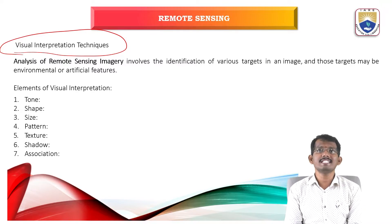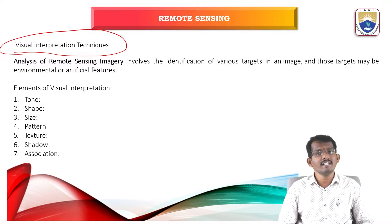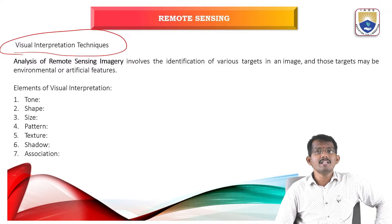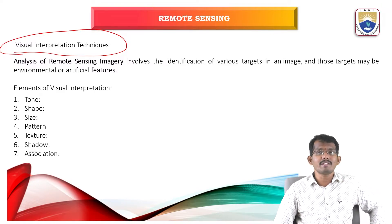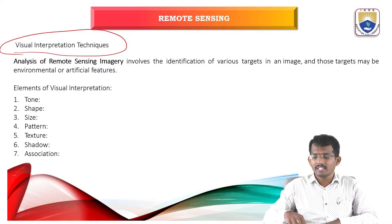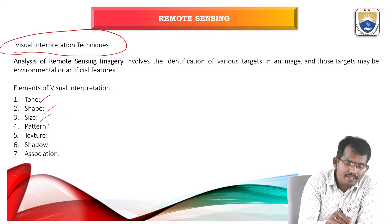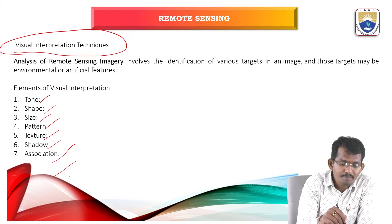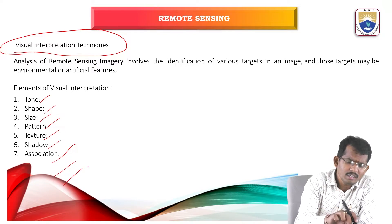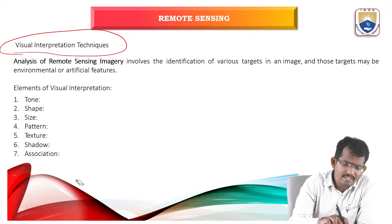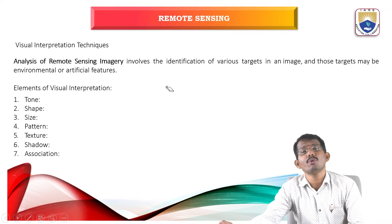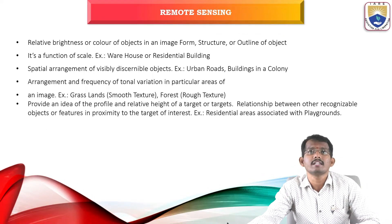Analysis of remote sensing imagery involves the identification of various targets in an image. In visual image interpretation techniques, there are some elements like tone, shape, size, pattern, texture, shadow, association, community, height, and depth. There are various elements in the visual image interpretation techniques.